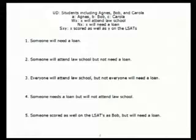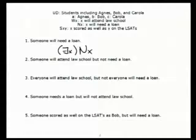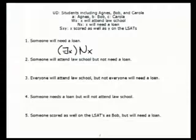How do I do the first one? There exists an X such that WX. That one's simple — it's straightforward. Peter, how about the second one? First of all, notice that the someone who attends law school is the same person as the one who needs a loan. So that gives you an indication that you're going to bind both of those sentences with the same quantifier.